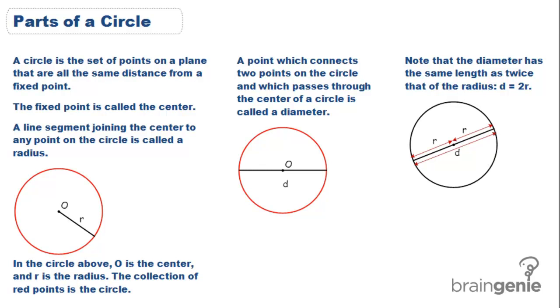Before we start solving for area and circumference, which is the perimeter of a circle, let's review the different parts of a circle.